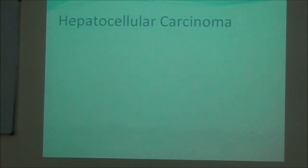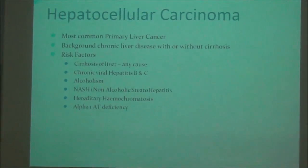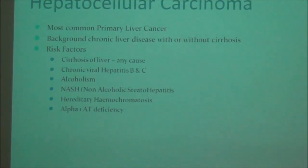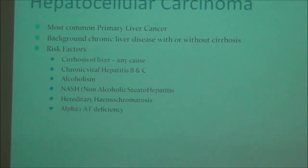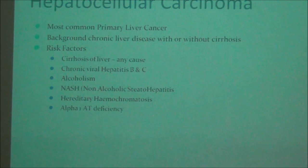Hepatocellular carcinoma is the most common primary liver cancer. In more than 90% of cases it arises on a background of chronic liver disease, with or without cirrhosis, but cirrhosis itself is a risk factor. Risk factors for hepatocellular carcinoma include cirrhosis of the liver from any cause, chronic viral hepatitis B and C, alcoholism, non-alcoholic steatohepatitis, hereditary hemochromatosis, alpha-1 antitrypsin deficiency, and others.